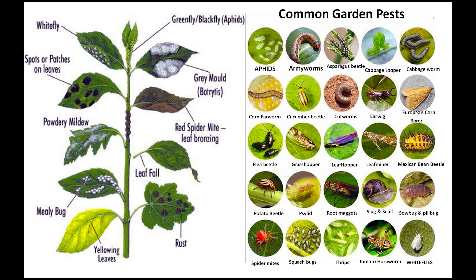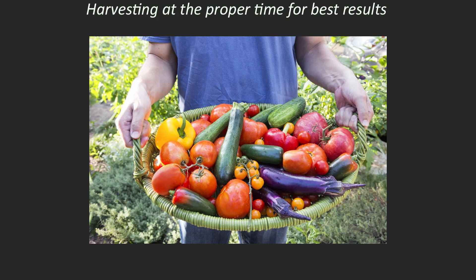9. Plant diseases and pests: learning to identify common plant diseases and pests will enable you to take preventive measures and apply appropriate treatments to protect your vegetable garden. 10. Pruning and harvesting: proper pruning techniques help maintain plant health and shape, while harvesting at the right time ensures the best flavor and nutritional value of your vegetables.